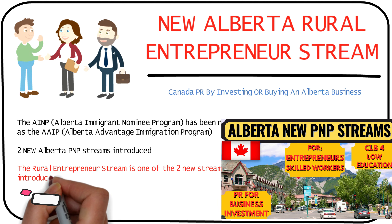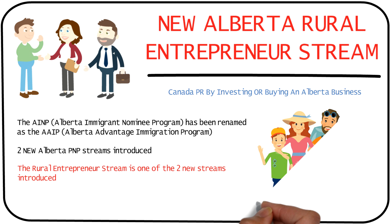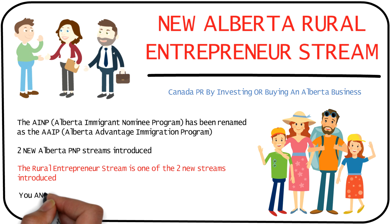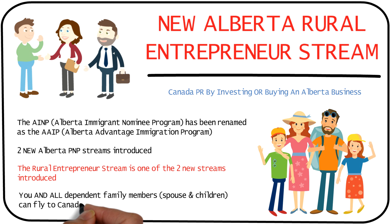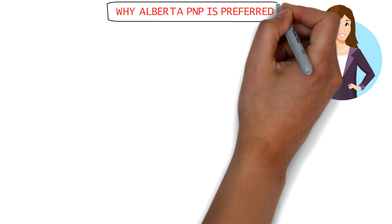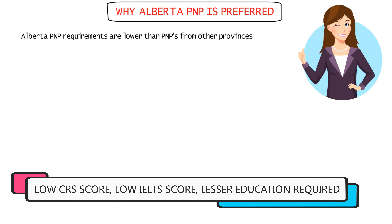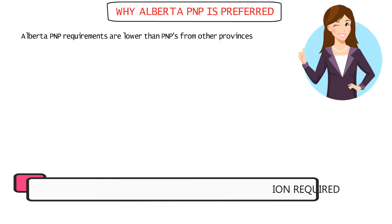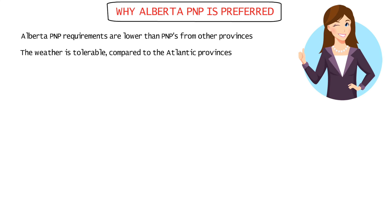If you're nominated by the AAIP through any of its seven streams, you can apply for permanent residence together with your spouse or common-law partner and your dependent children, so all of you can get your PR and fly to Canada together. The PNP pathway by Alberta is often favored because its requirements are comparatively lower than PNP programs from other provinces and the climate is more favorable than the Atlantic provinces.